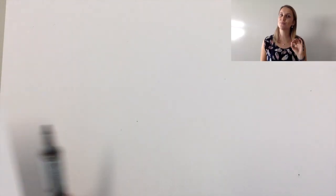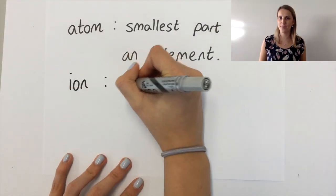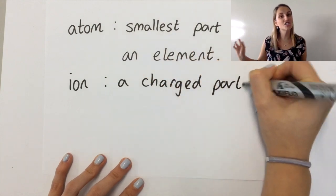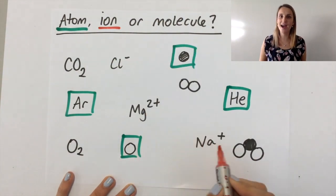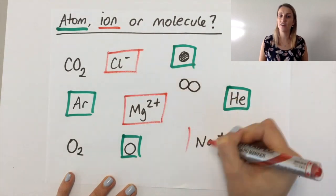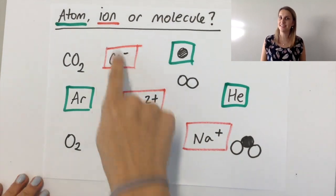Ions are probably the easiest of the three because an ion is a charged particle. So we're looking for anything with a positive or negative charge. You can see that I've put a big red square around all of the things that have a charge associated with them.